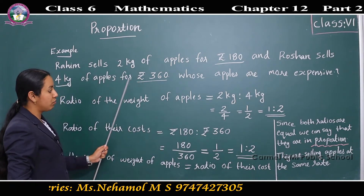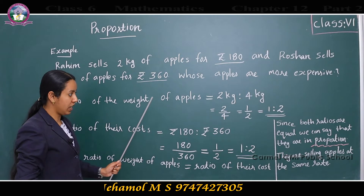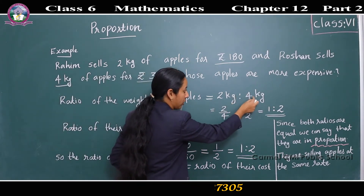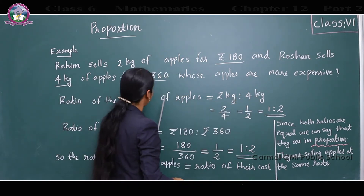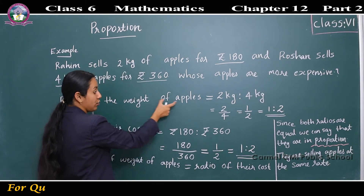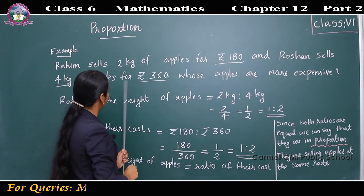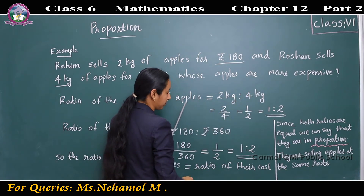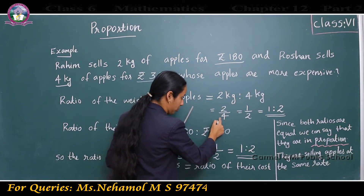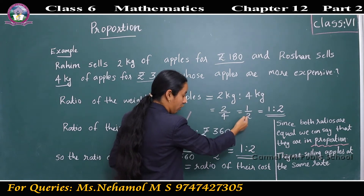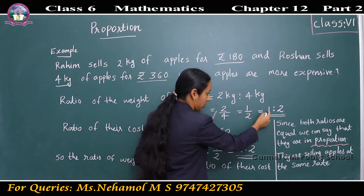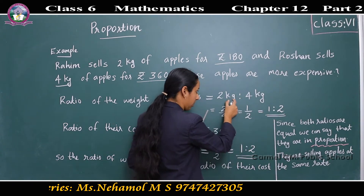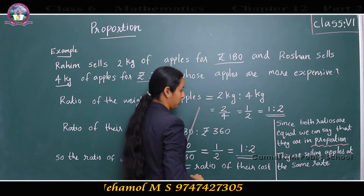The ratio of the weight of apples is equal to 2 kilograms is to 4 kilograms. That is equal to 2 by 4, which simplifies to 1 by 2. The corresponding ratio is 1 is to 2.